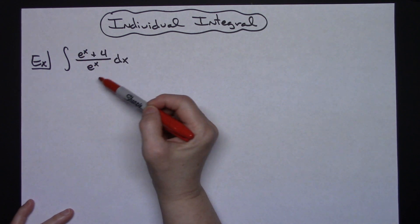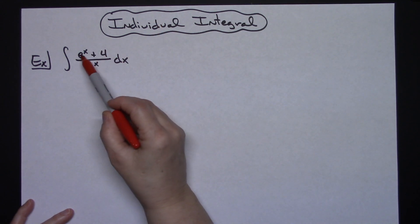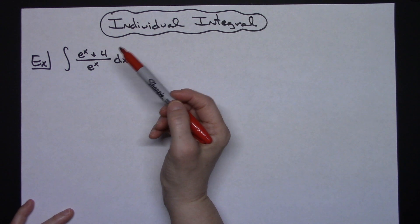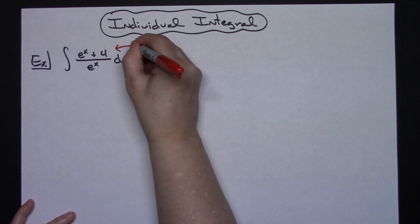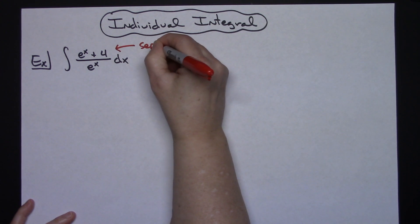In a problem like this, what you're going to want to look for is you've got something that's being added in that numerator and you've just got e to the x in the denominator.